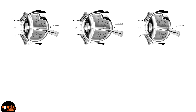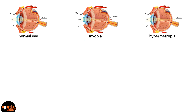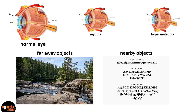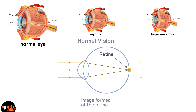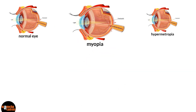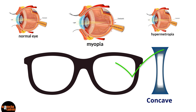Let's summarize what we have learned in a table. We have discussed three cases: the normal eye, myopia, and hypermetropia. For a person with a normal eye, both far away and nearby objects are clear — they don't need spectacles, and light rays fall directly on the retina. For a person with myopia or nearsightedness, nearby objects are clear but far away objects are blurred. They need concave lenses to correct vision. A concave lens has negative power, so the optician's prescription for a myopic person will always have negative power.